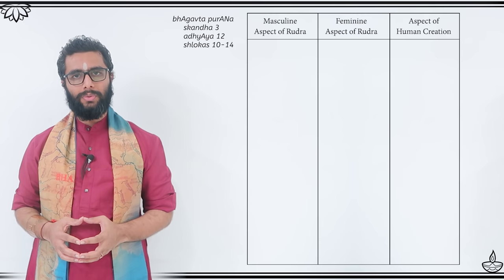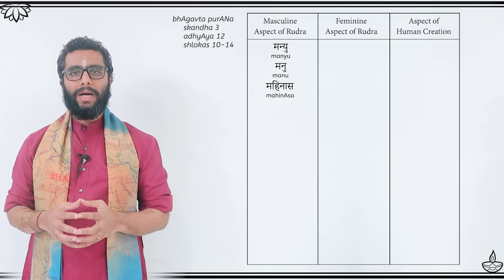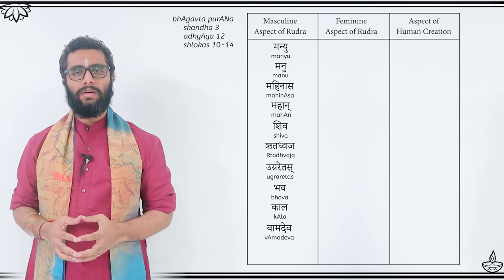The Bhagavata Purana mentions that Lord Brahma created 11 different forms of Rudra by the names of Manyu, Manu, Mahinasa, Mahan, Shiva, Ritadhoja, Ugraretas, Bhava, Kala, Vamadeva, and Dhritavrata.